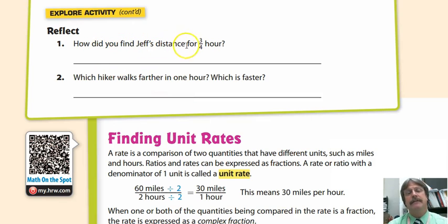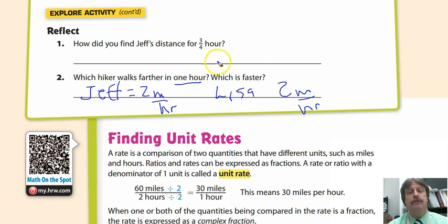In the Explorer Activity, how do you find Jeff's distance in three quarters hour? Which hiker walks further in one hour? When you compare the two, that's the key: compare. Look at Lisa, look at Jeff, and make a comparison. When you compare those two at one hour, which one is faster? How would you answer that?